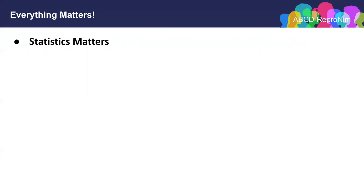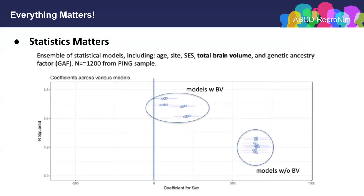Exactly what statistical test you use can also affect the nature, interpretation, and size of the effect you identify. Here, we are again using PING data, n of approximately 1,200 subjects, looking at the sex effect in hippocampal volume. In the plots, each statistical test that I run will be represented as a blue circle. I'm plotting the circle on the x-axis to represent the observed effect size, and the y-axis to represent the r-squared of the model — in other words, the amount of variance explained. Higher r-squared represents better models. The x-axis whiskers are the 95% confidence interval for the effect size. If that interval touches zero for effect size, that test will be deemed not significant.